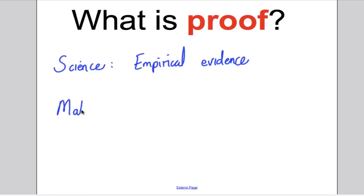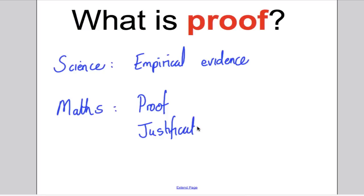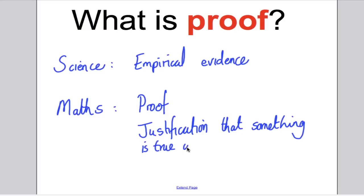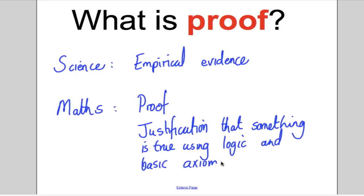In maths, you can't rely on empirical evidence. You need proof, and proof is justification that something is true using logic — formal logic and basic axioms. By axioms, I mean some fundamental truths that you assume to be true, and building upon these and using logic, you can prove that the thing you're trying to show is actually true. I just want to show you the difference between empirical evidence and proof, and how proof is a much more powerful thing.